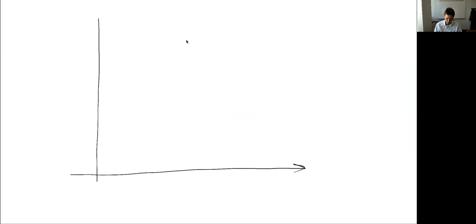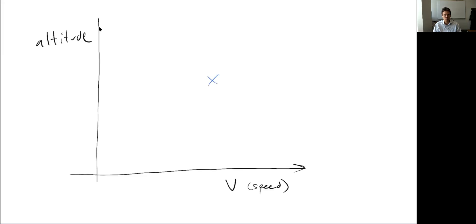To motivate this, let's draw a plot with speed on the x-axis and altitude on the y-axis. When you design an airplane for some given cruise condition, it isn't going to only operate at one condition. So the question is: what are our limits, and we need to make sure our aircraft is structurally sound within this whole envelope.